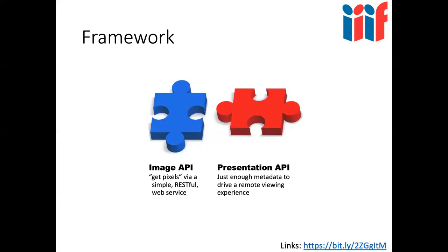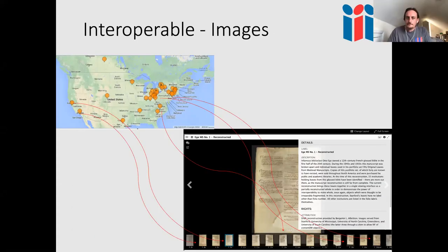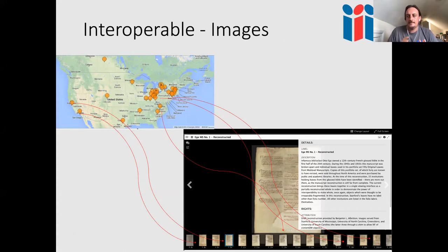Regarding the unbound manuscript example where each individual leaf is from a separate institution — that is a manifest, not a collection. It's a single manifest that points to individual images at different locations. Within each canvas, you specify the Image API endpoint via a service element. In this example, the Image API endpoints happen to be at different institutions — that's how the reunification works — but a canvas always points to its image's home location.